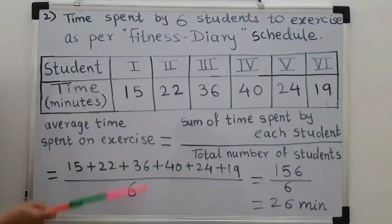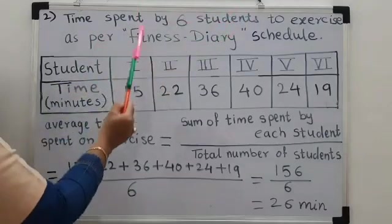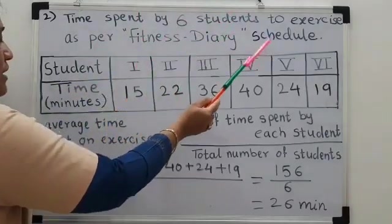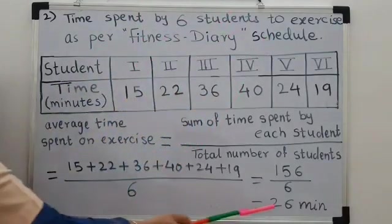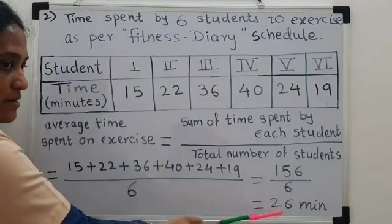Thus, in this example, the average time spent on fitness diary for exercising is 26 minutes.